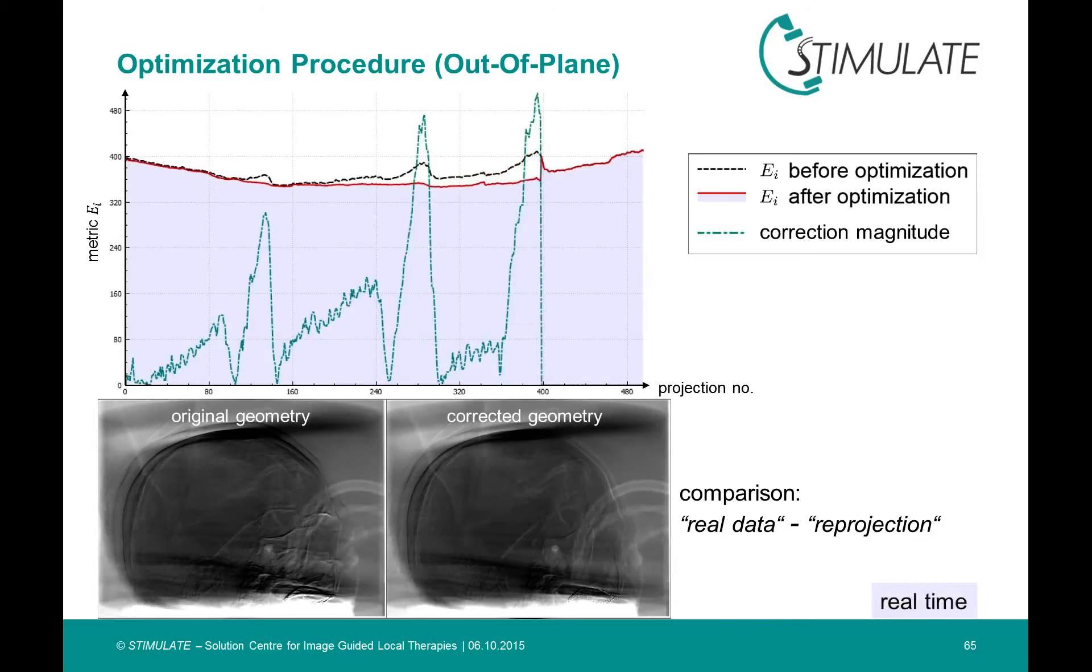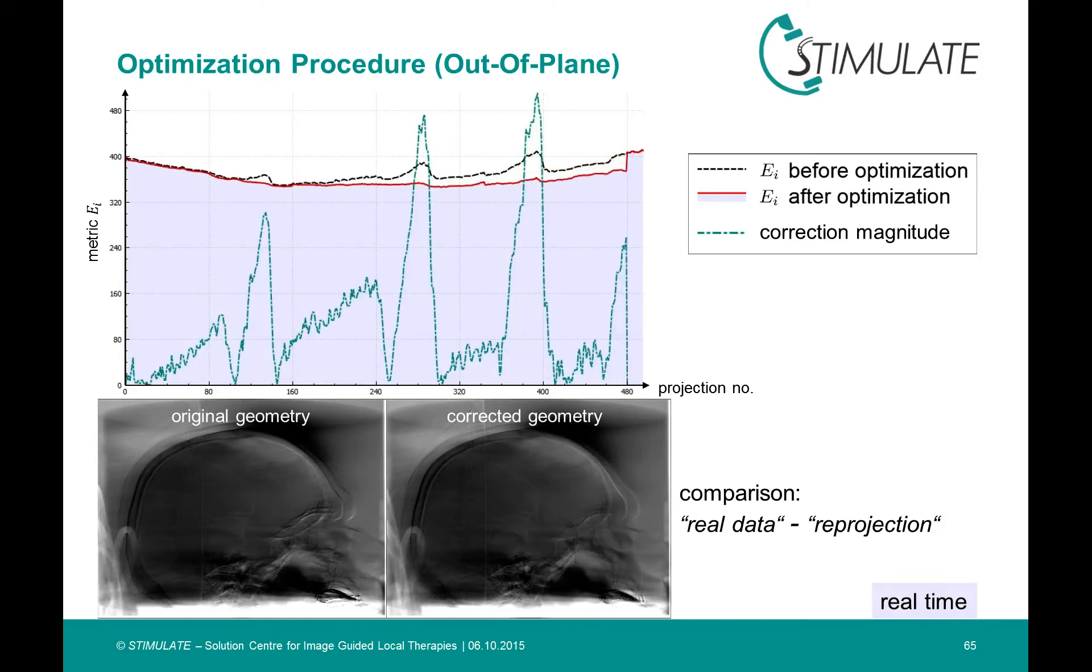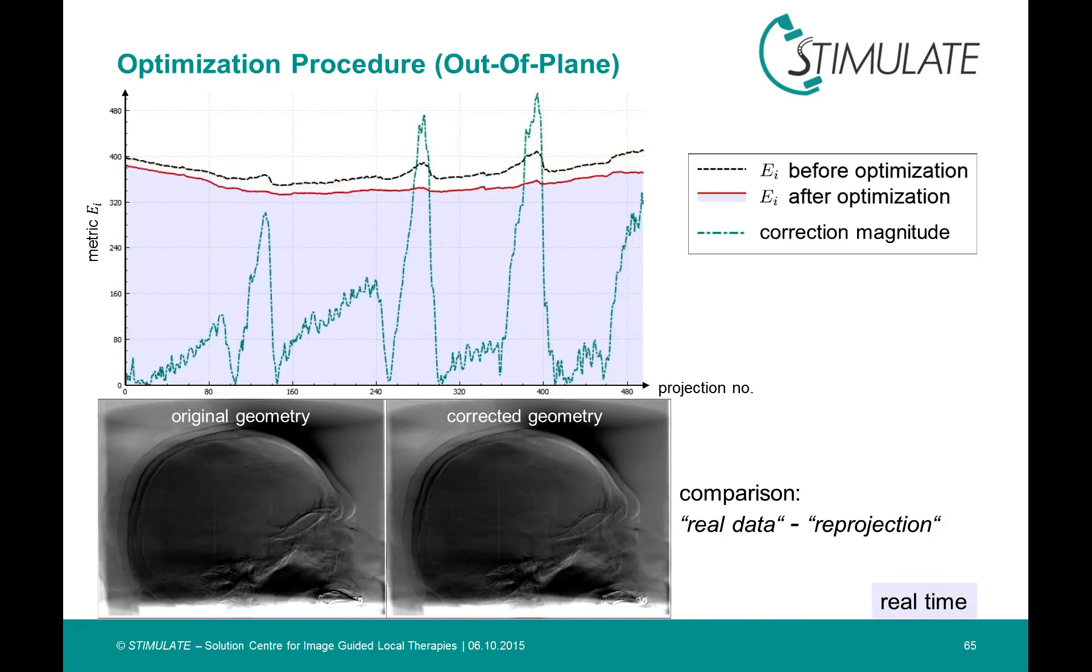And at the end of the day, you can see an obvious correlation between the correction magnitude in green and the matrix before the optimization. Therefore, we are able to see already from the pattern of our measure where motion appeared during the scan.